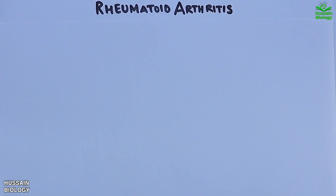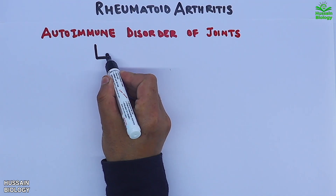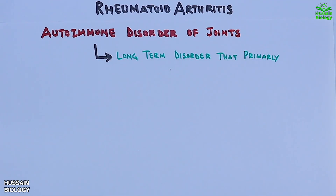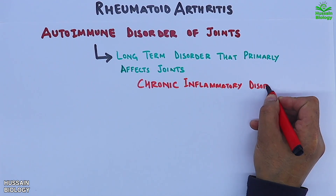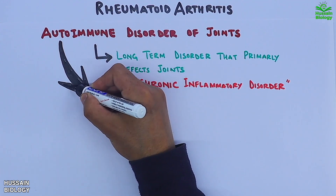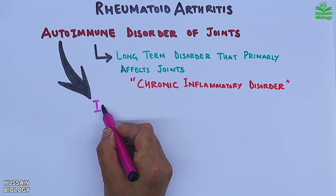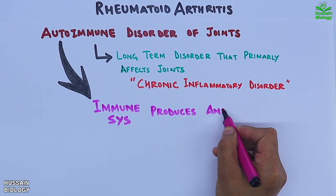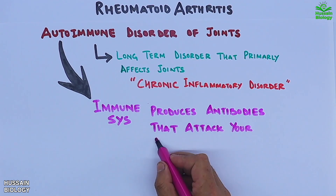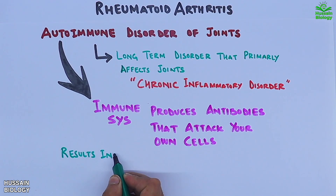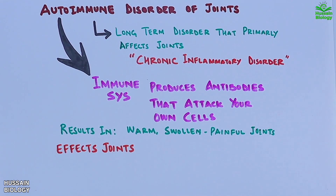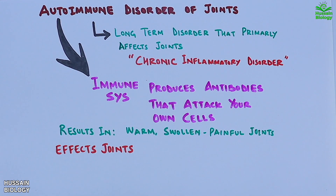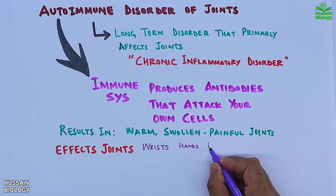Rheumatoid arthritis is an autoimmune disorder of joints. It is a long-term, chronic inflammatory disorder where the immune system produces antibodies that attack your own cells. It results in warm, swollen, and painful joints, affecting the wrists, hands, knees, and ankles.